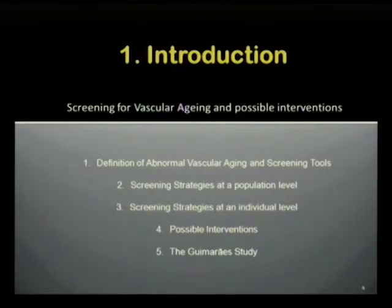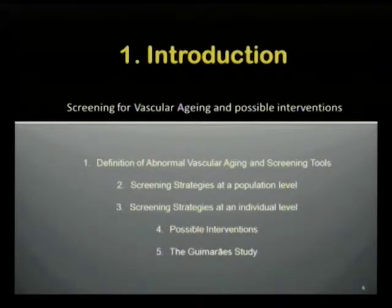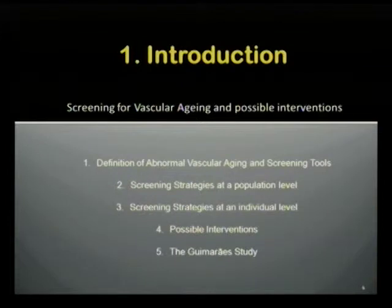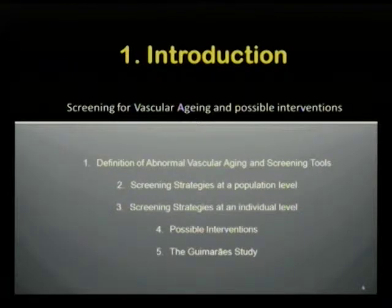The overview of what I'm trying to do here today touches five points: not only a definition of abnormal vascular ageing, but also how can we screen it and who should we screen, if there are any differences in the screening strategies between the population and the individual level, what could be possible interventions, and then a short review of what we have been working on in Guimarães in Portugal.